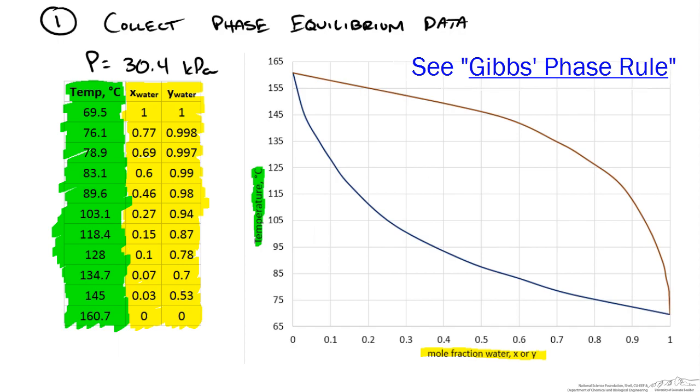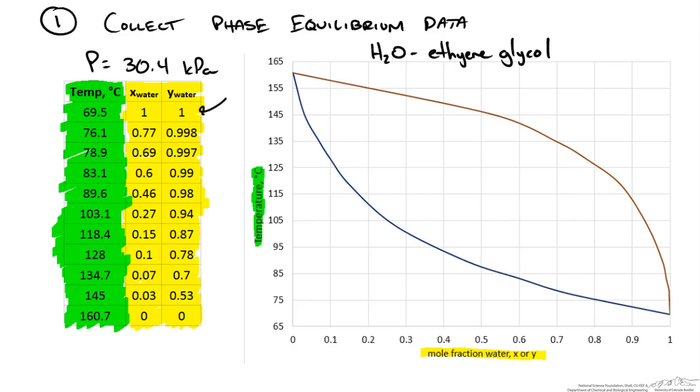So a couple things to point out. The plot is for water and ethylene glycol. Typically our x-axis will be for the more volatile component. So is it here? Since we have pure water when we have a value of 1, then indeed this is for water.